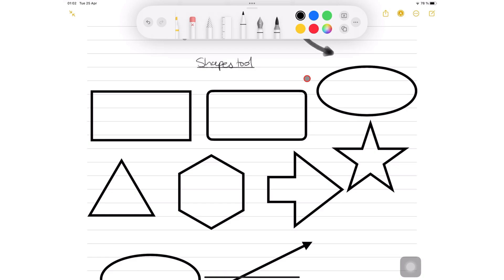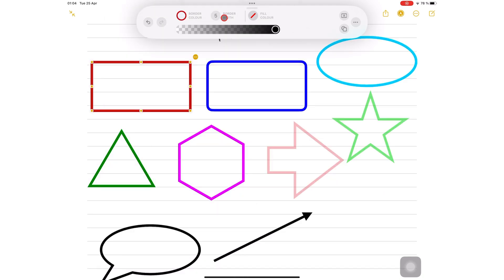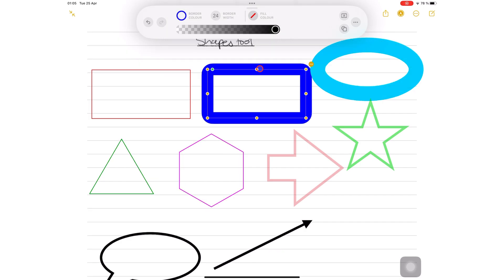To modify a shape, tap on it to bring up a customization menu on the toolbar, which allows you to change the following: border color and border opacity, border width, fill color and opacity.